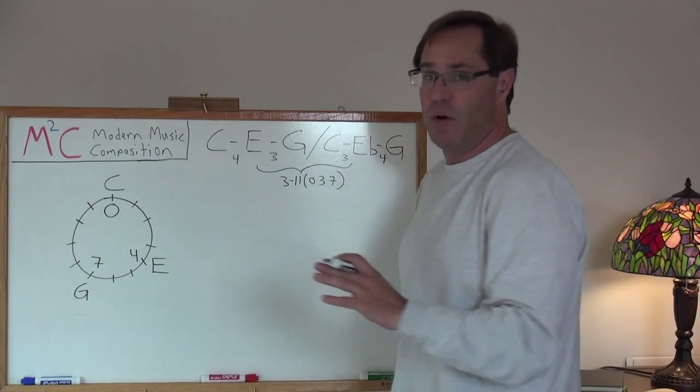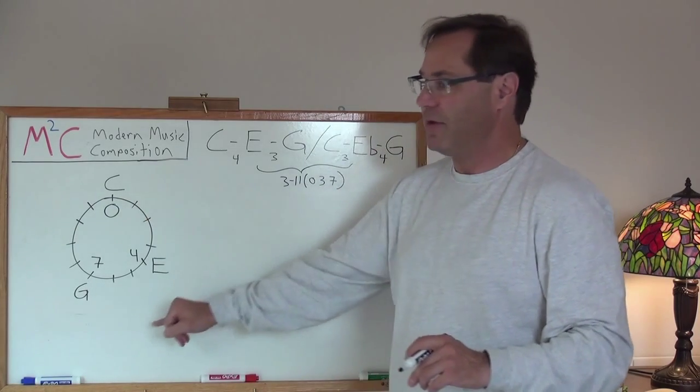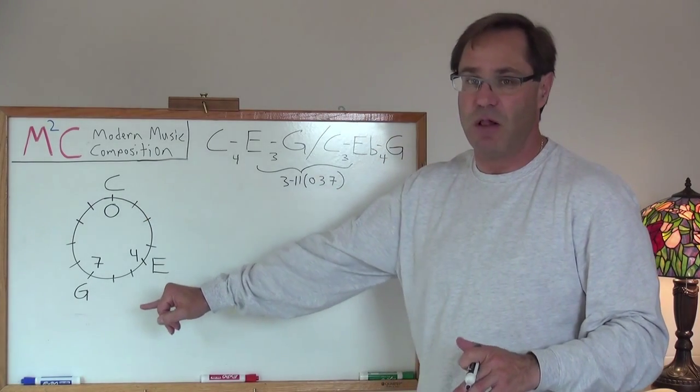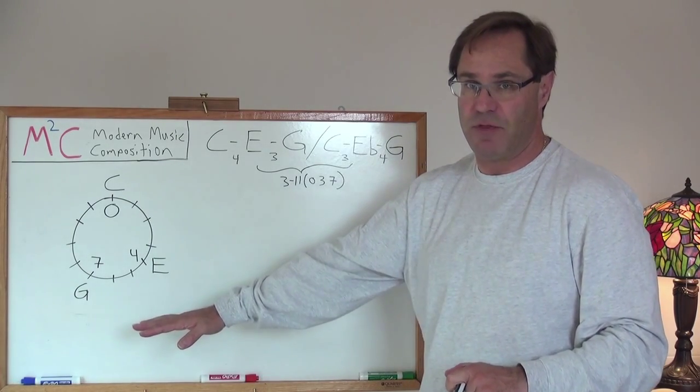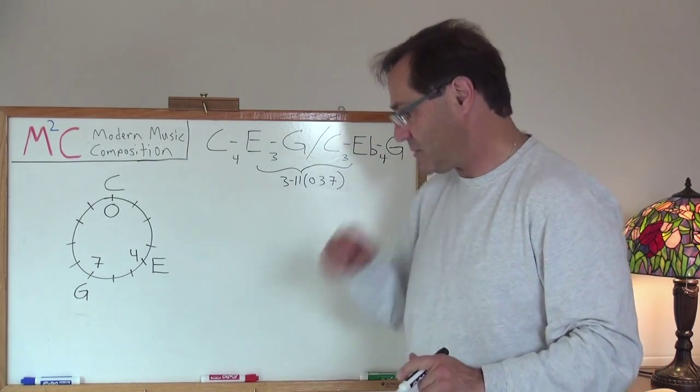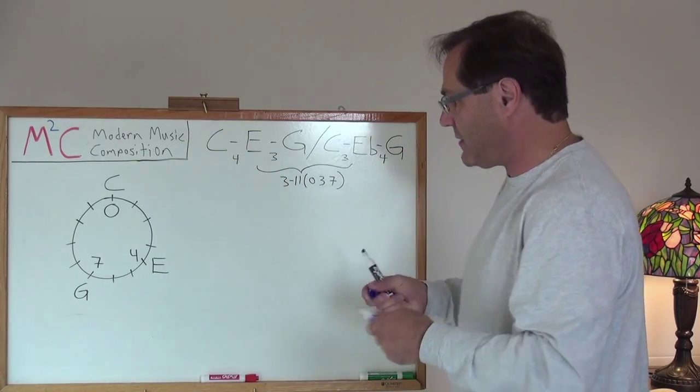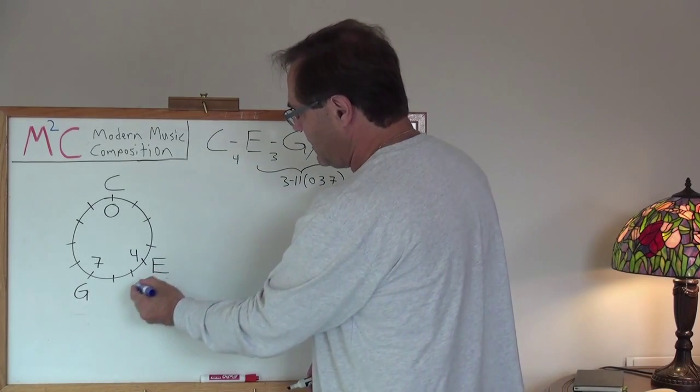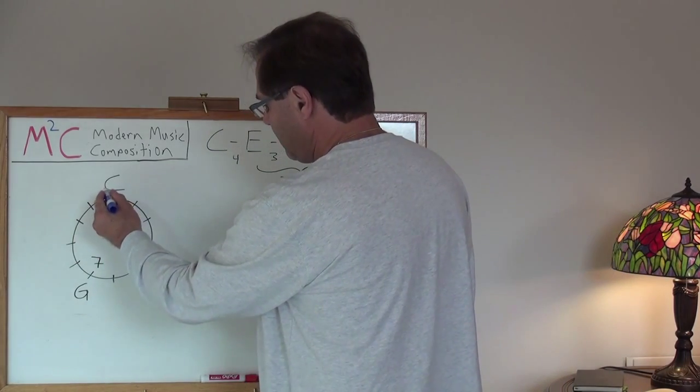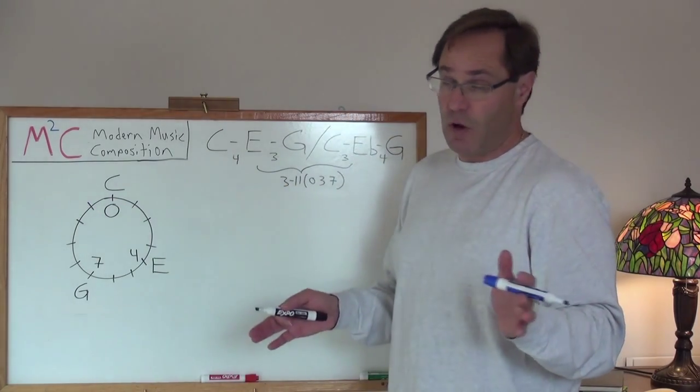So first thing we want to do is clockwise traverse the path in a way in which we create the smallest path possible and touch upon each one of the notes. So to do that, let's take a look and see what that path is. Well, if I were to start from E and take it up to C, that would be 8 semitones.